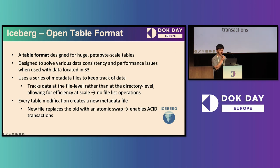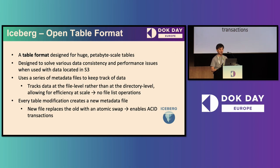We chose Apache Iceberg as the table format because it is designed for handling petabyte-scale datasets and solving consistency and performance issues when storing data on cloud storage. It was initiated by Netflix and donated to the open source community. It uses a series of metadata to track data changes while maintaining the performance of data assets. Table changes create a new snapshot linked with multiple metadata files, and it uses atomic switching to support ACID properties — atomicity, consistency, isolation, and durability — ensuring data reliability and integrity even with multiple concurrent operations.